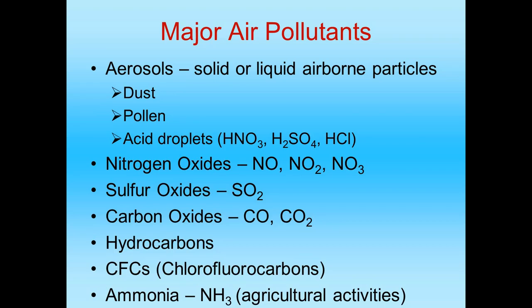In gaseous form, we have nitrogen oxides: NO, NO2, and NO3. Because humans are naturally lazy, instead of writing all three, we write NOx — that subscript X represents all the nitrogen oxides together. We also have sulfur oxides, primarily sulfur dioxide. We have carbon oxides: carbon monoxide (CO) and carbon dioxide (CO2). We have hydrocarbons — when we burn fossil fuels like coal, oil, or natural gas, we produce compounds containing carbon, hydrogen, and sometimes oxygen, like our BTEX compounds: benzene, toluene, ethylbenzene, and xylenes.